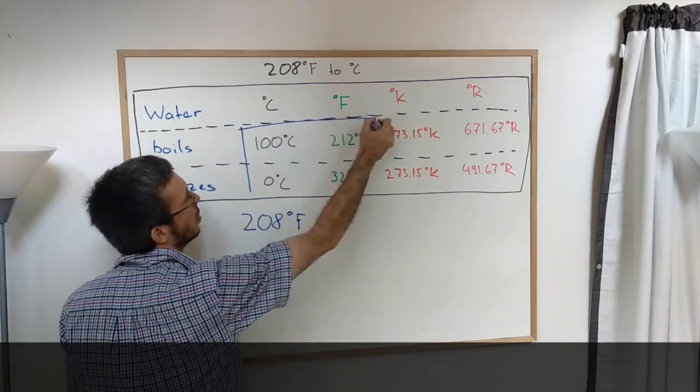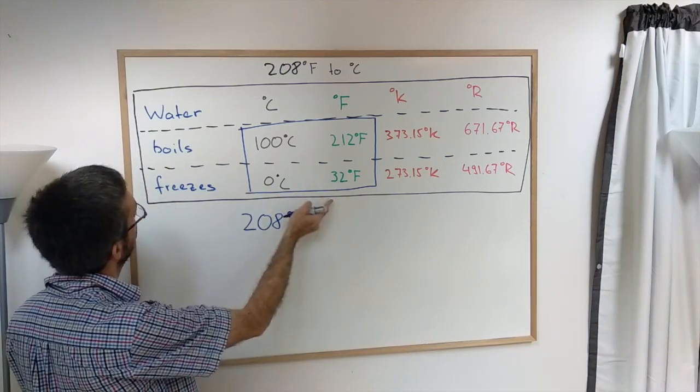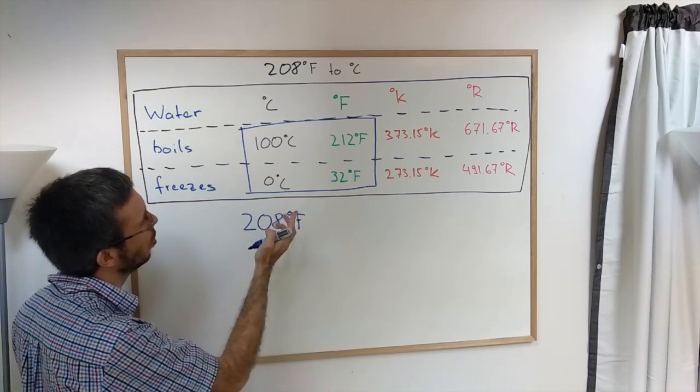We are actually going to use this data here. We are going to use the advantage that both scales are defined over the properties of water, the boiling and the freezing point.